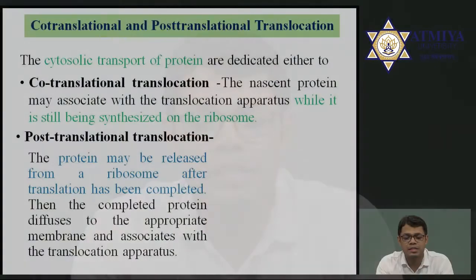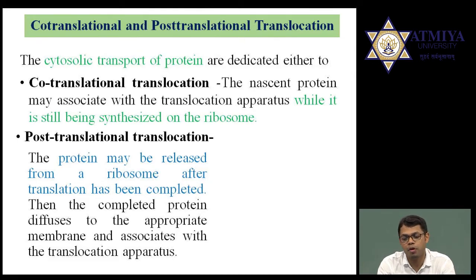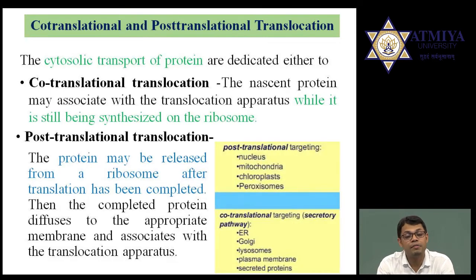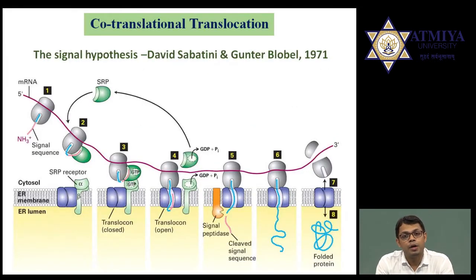Post-translational translocation is a simpler mechanism where protein synthesis occurs on free ribosomes in the cytoplasm itself. Once protein is totally synthesized — complete synthesis occurs — then this protein translocates from the cytoplasm to certain organelles. The target sites for post-translational translocation are the nucleus, mitochondria, chloroplast, and peroxisome, whereas for co-translational targeting the target sites are the ER, Golgi body, lysosome, plasma membrane, and secretory proteins outside the cell.